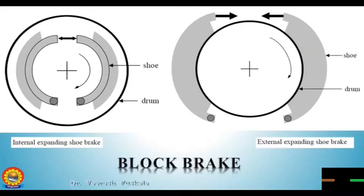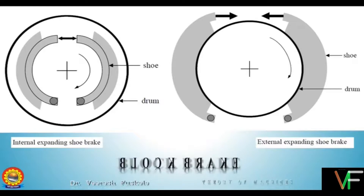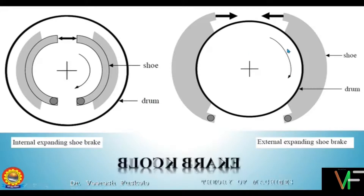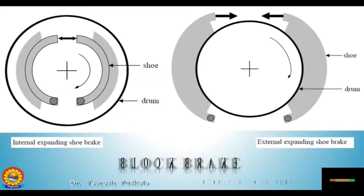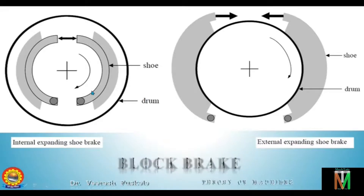Next, the internal and external expanding brake. Earlier, automobiles used band brakes which were exposed to dirt and water, and their heat dissipation capacity was also poor. Then band brakes were replaced by internal expanding shoe brakes having at least one self-energizing shoe per wheel. This results in tremendous friction giving great braking power without excess use of pedal pressure. The figure shows the internal shoe automobile brake.